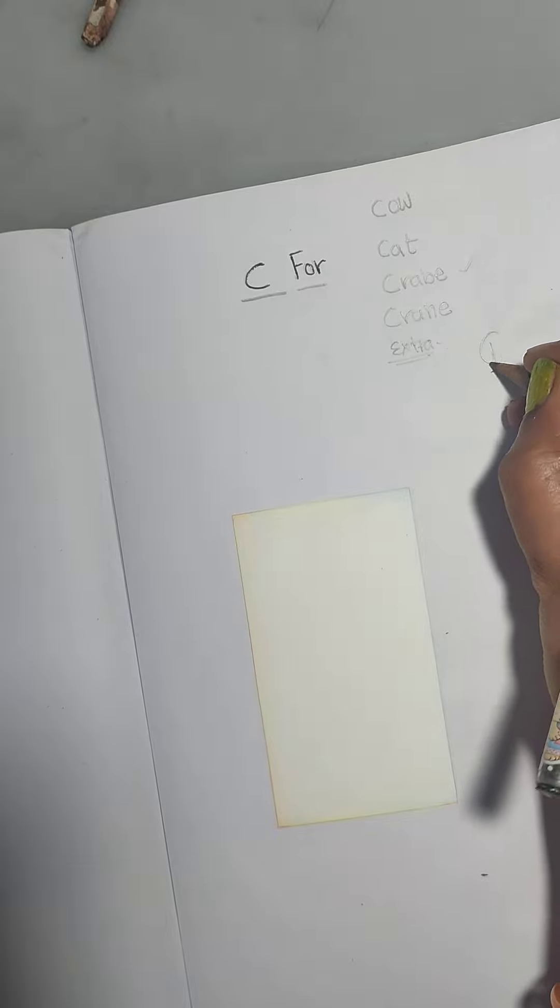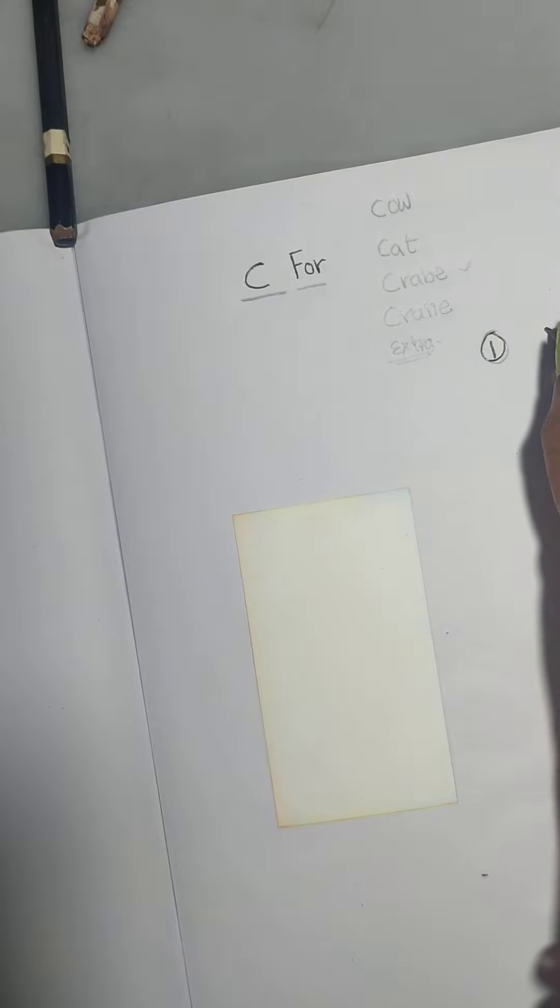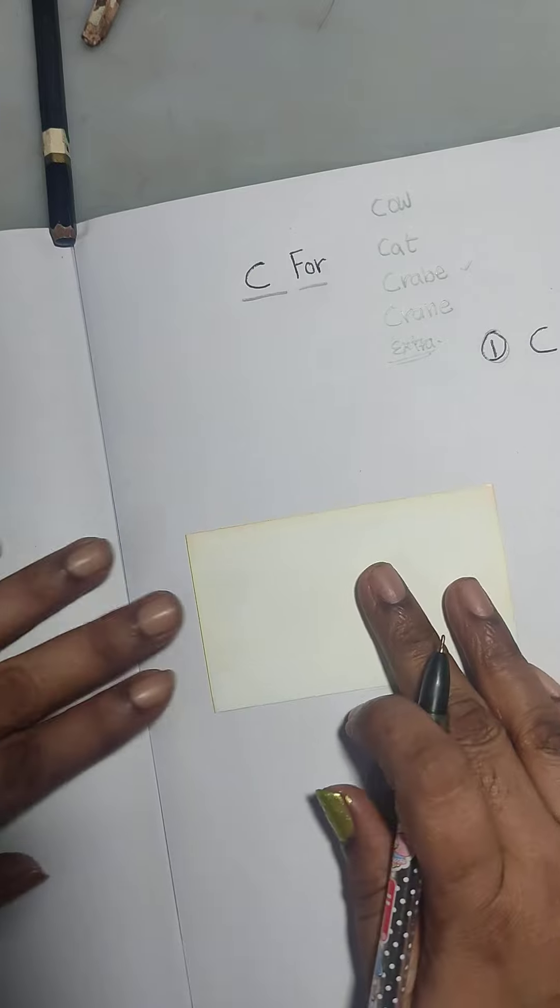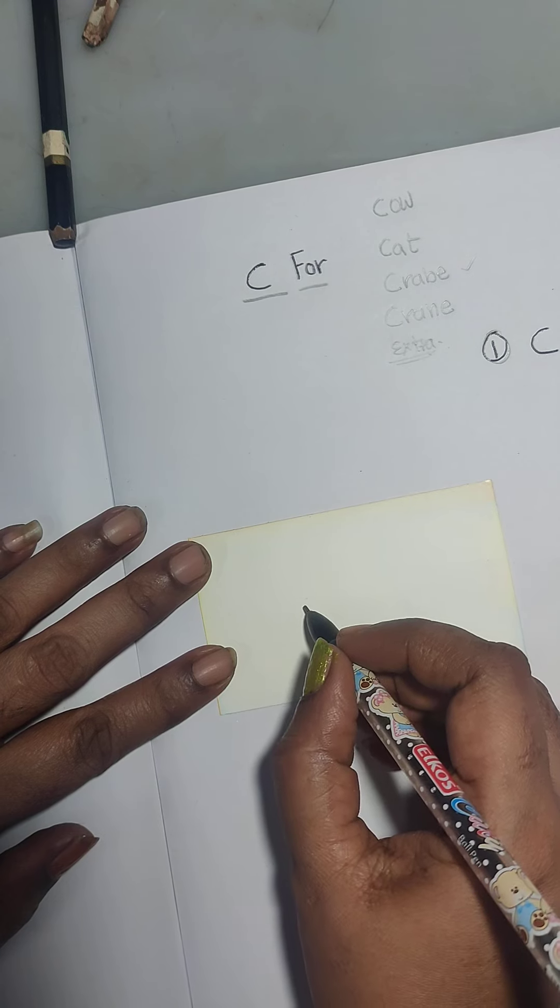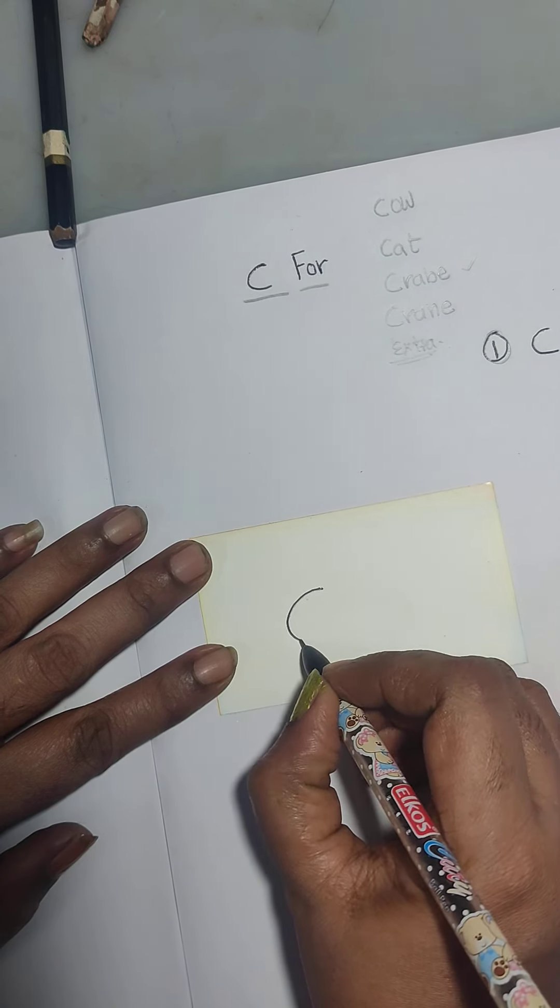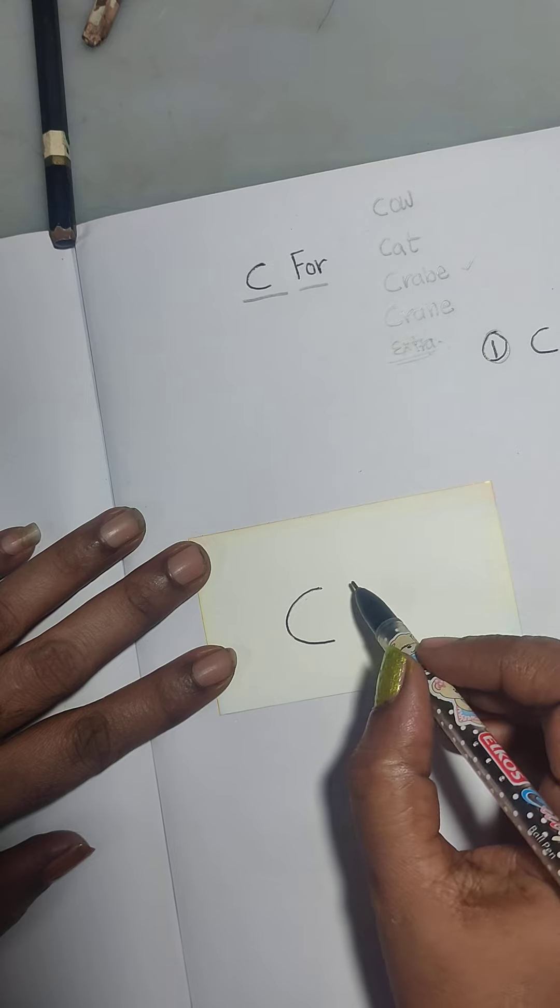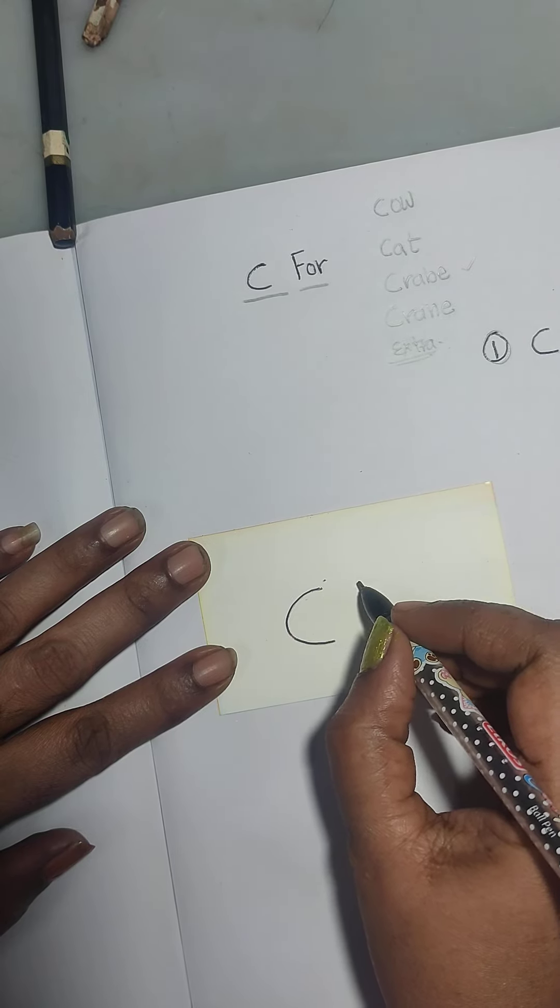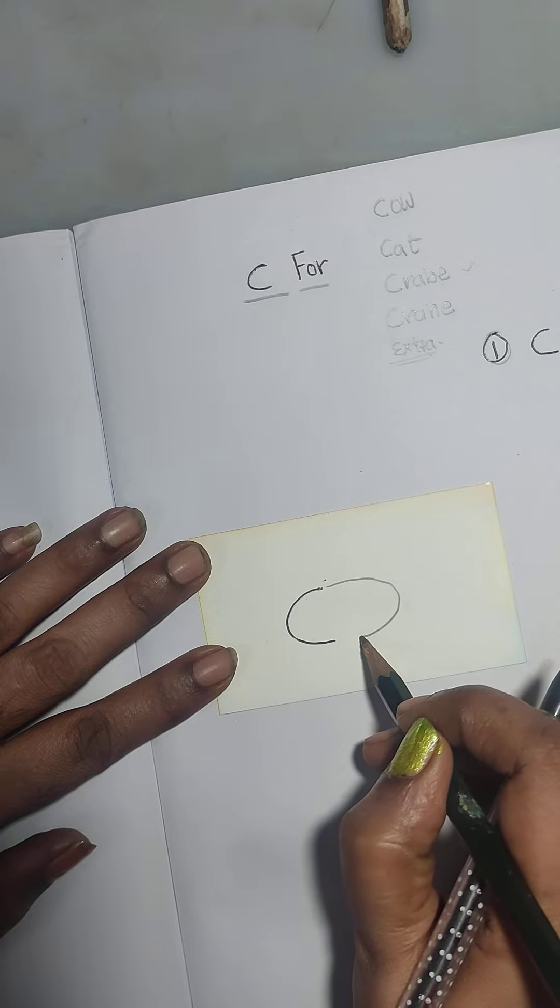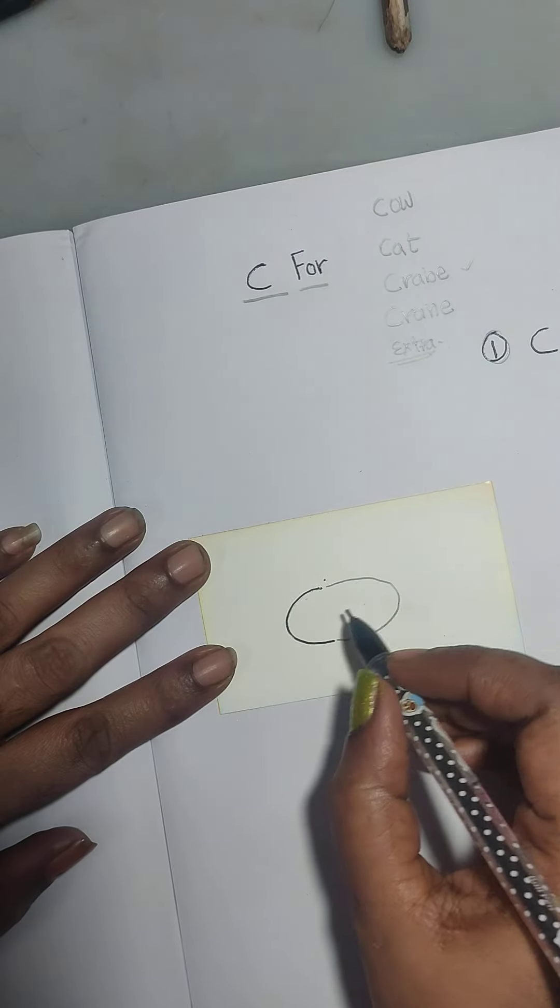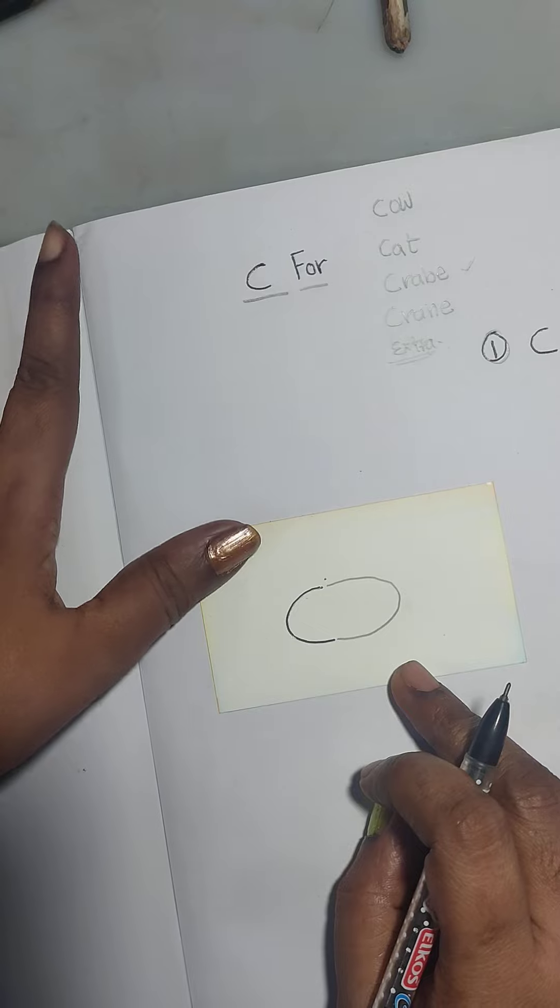First we have to take number one step. It's C we are doing. We will take C. First we are taking simple C. Next we are taking another C also. Next, repeated C also. We are taking.